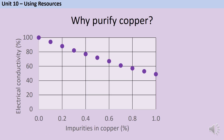After copper is extracted by reduction with carbon, it can be purified using electrolysis, but this is a very expensive process because it uses a lot of electricity. Copper is a really useful material because it has very high electrical conductivity and it's ductile, which means it can be stretched into wires, making it perfect for electrical wiring.